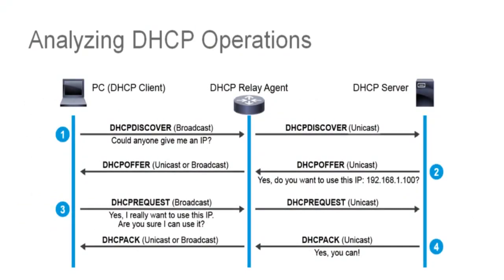So far, we've described the DHCP process on the same subnet. But what if the DHCP server is not on the same subnet as the DHCP client? A router is not going to automatically forward a broadcast message without some type of intervention. This is where the DHCP relay agent function comes in. Its purpose is to forward the DHCP message between clients and servers on different subnets.